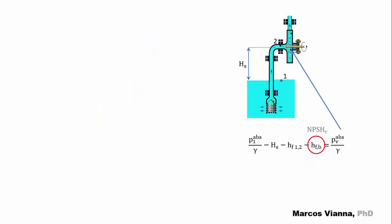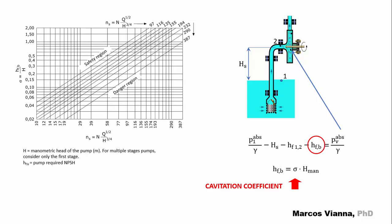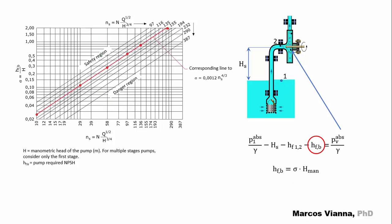Let's start with a small change in our nomenclature. We'll use HFB instead of NPSHR to represent the required NPSH. We can find its value by multiplying the manometric head by sigma, which is the cavitation coefficient. Finding its value can be tricky. This diagram shows where we can safely operate the pump if we want to prevent cavitation. For this purpose, we must calculate the specific speed of the pump and try to avoid the danger region. This line is usually safe for practical purposes, so let's use it in our example.